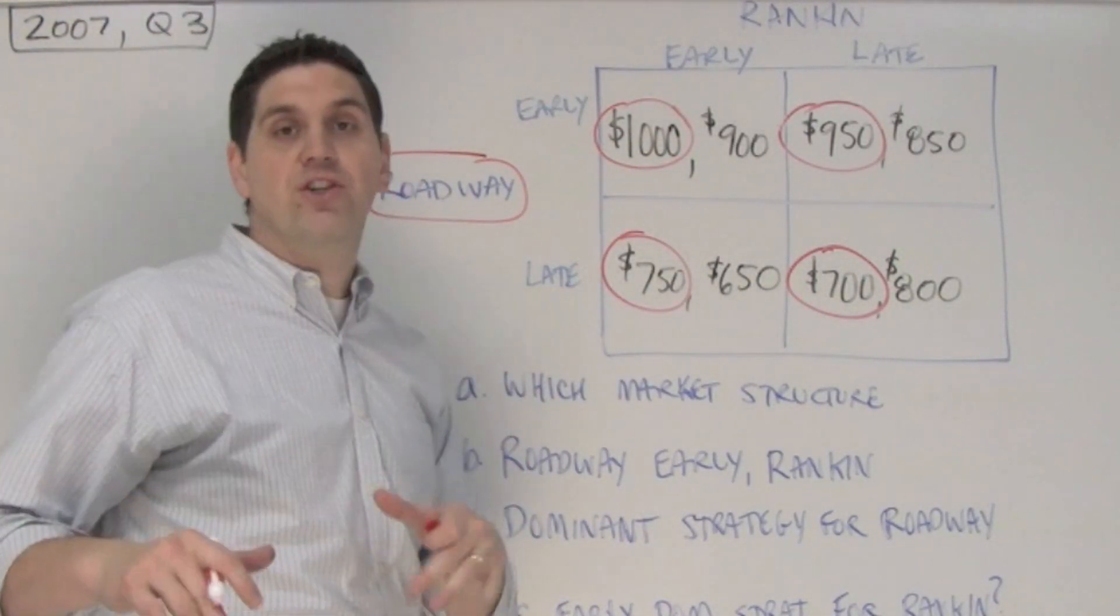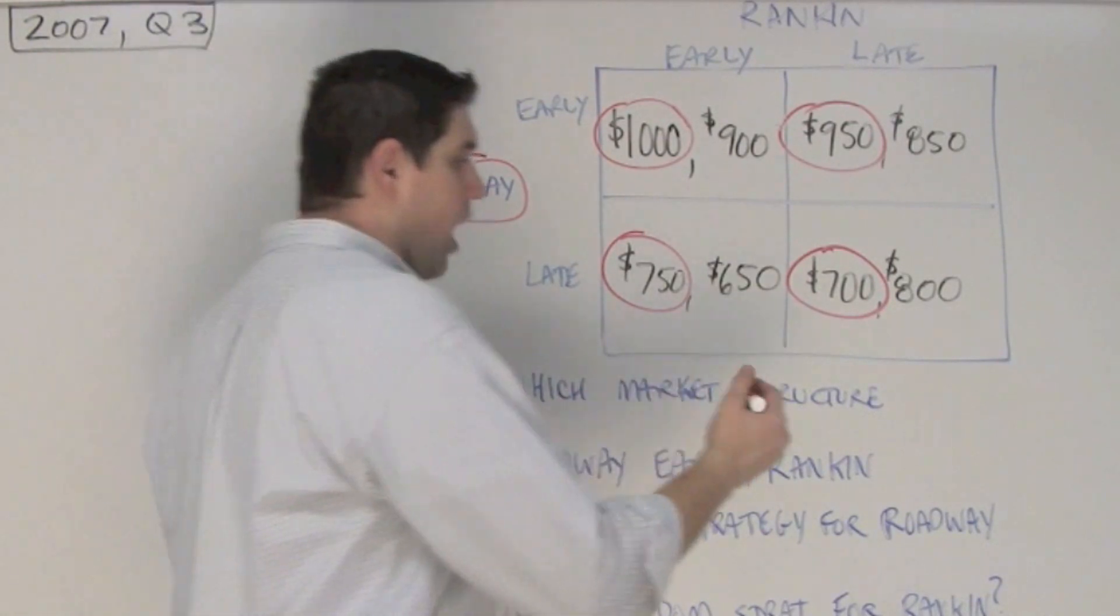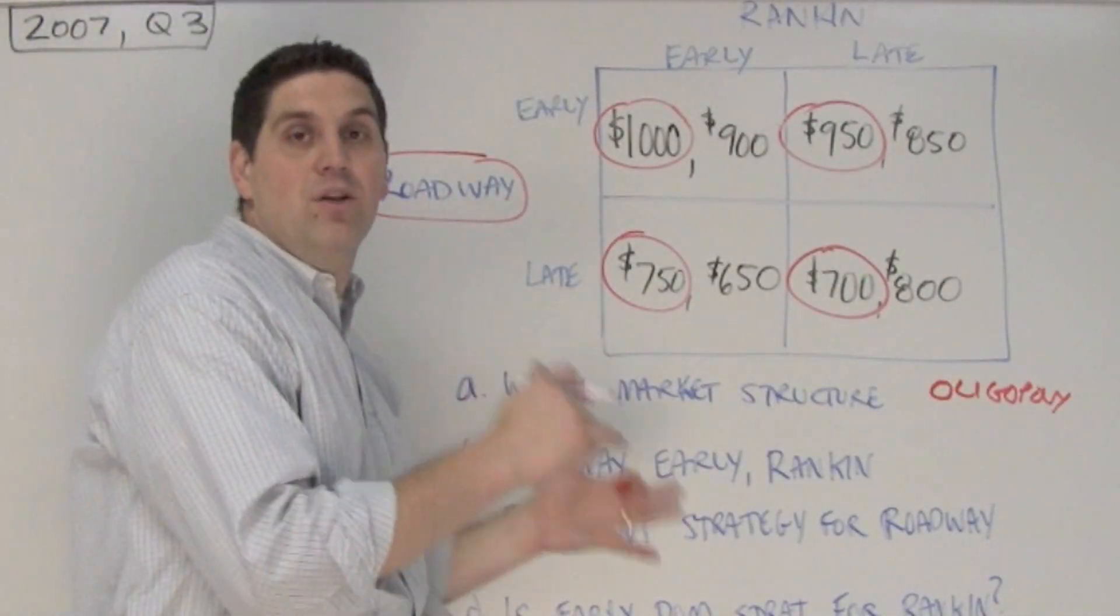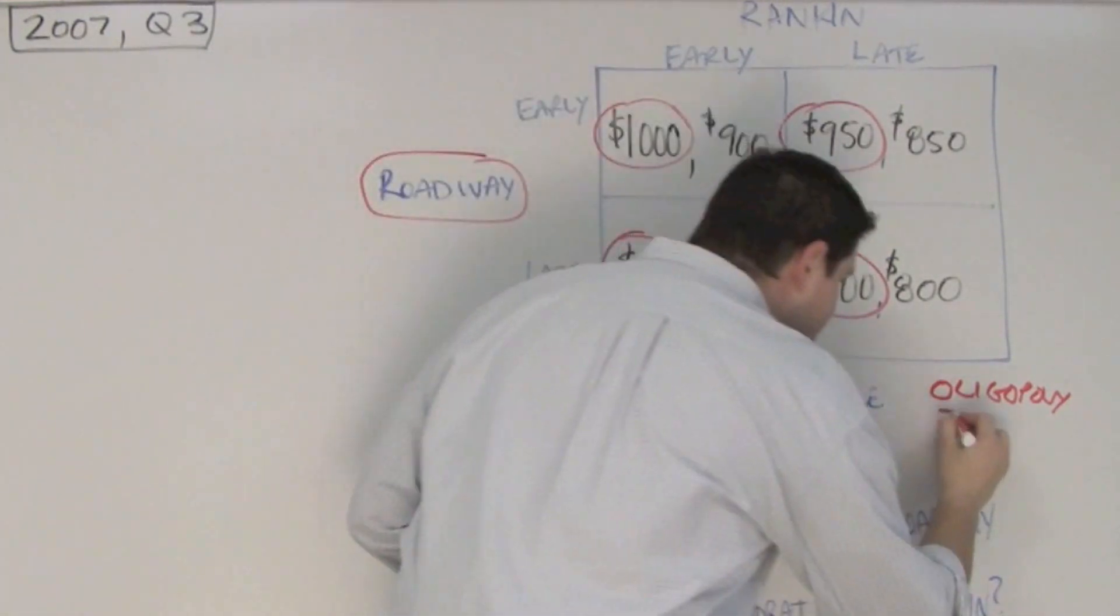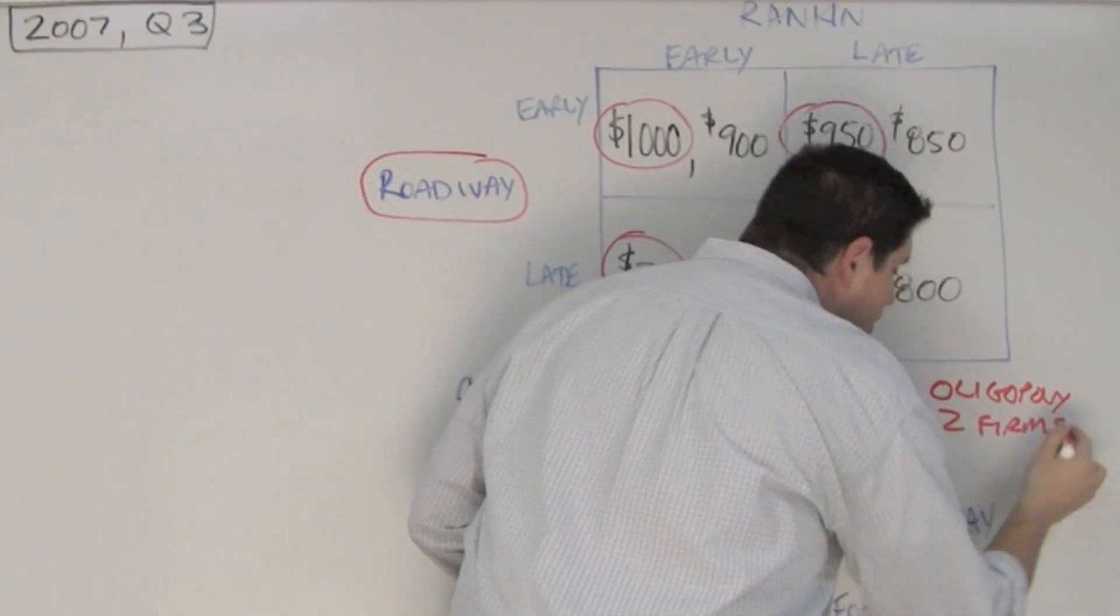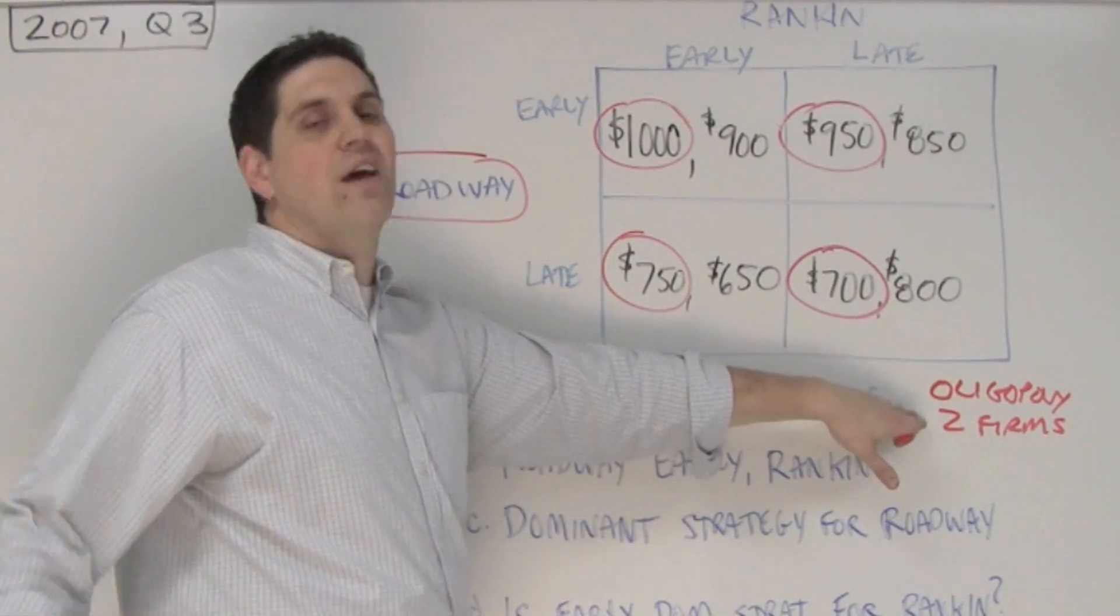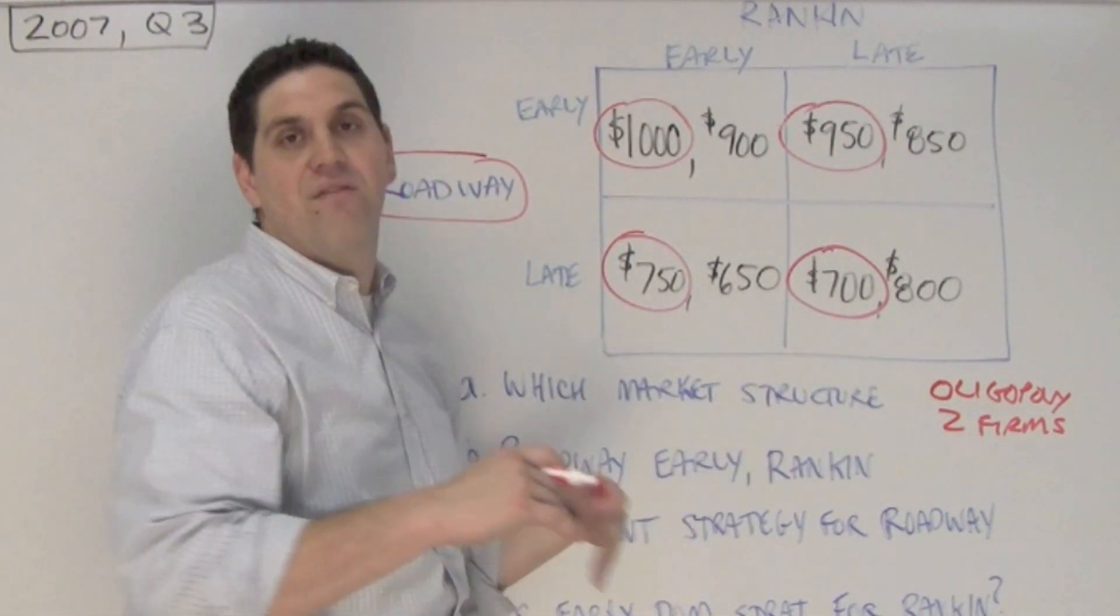Question number one, in which market structure is this firm selling output? The answer is oligopoly. But since this says explain, I've got to explain how I do that. Well, it's actually pretty easy because there's two firms. If there's only two firms competing against each other, then it must be an oligopoly. Another thing you could have said is that there's mutual interdependence or they have to worry about the pricing of the other guy.